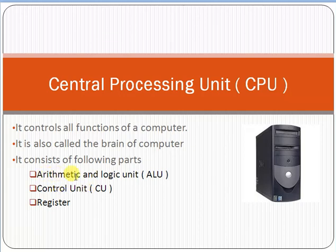CPU has basically three main units. First one is called Arithmetic and Logic Unit (ALU), second is called Control Unit (CU), and third one is called Register.